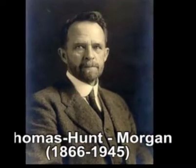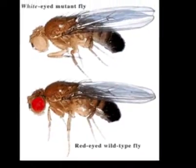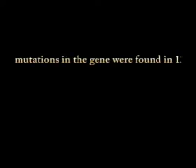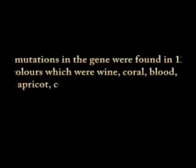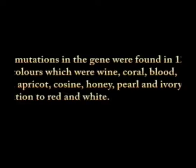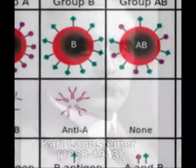Thomas Hunt Morgan had noticed that one of the flies had white eyes when red was their normal color. By studying the heredity of this trait, he could identify the genes responsible for the character in the X chromosome of the fly. Morgan was the first of the illustrious geneticists who received the Nobel Prize.